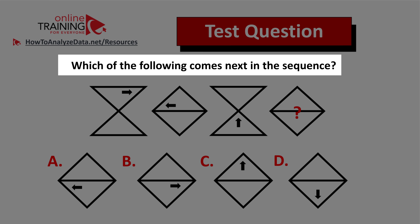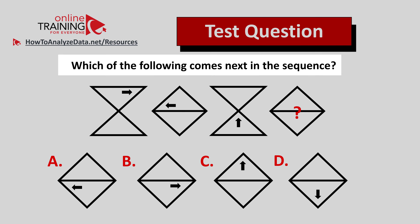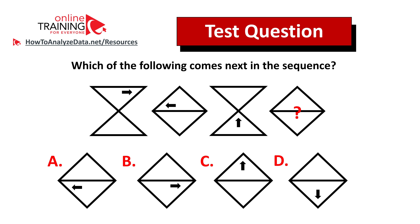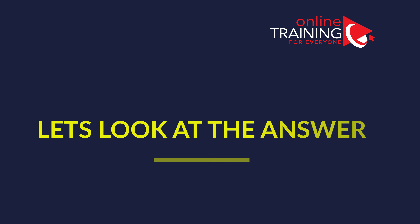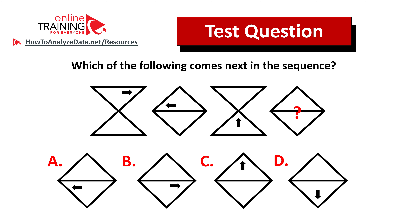You have four different choices: a, b, c, and d. The answer is not obvious, but always look for patterns. Once you determine the pattern, this question is very easy to answer. Give yourself 10 to 15 seconds to see if you can come up with the answer.